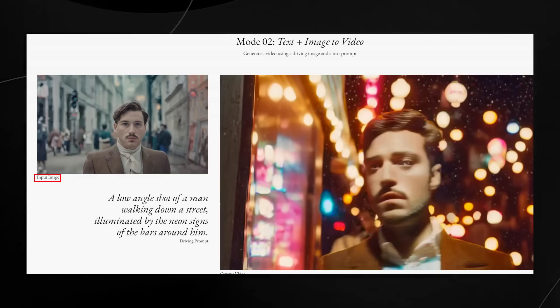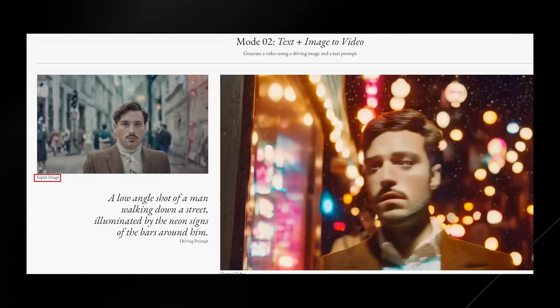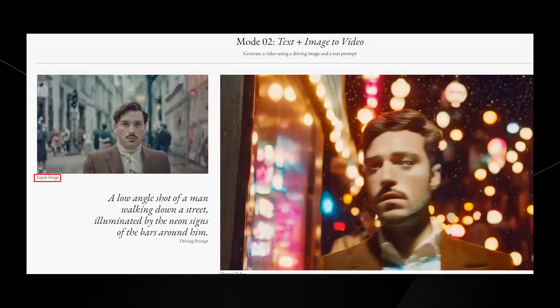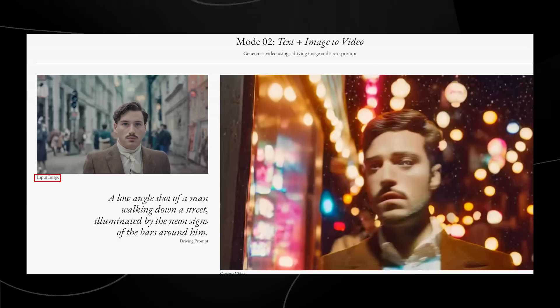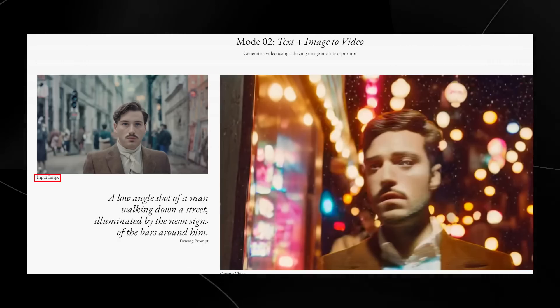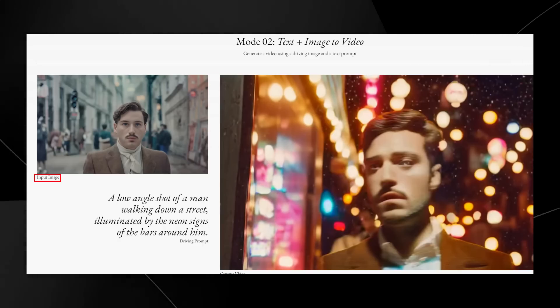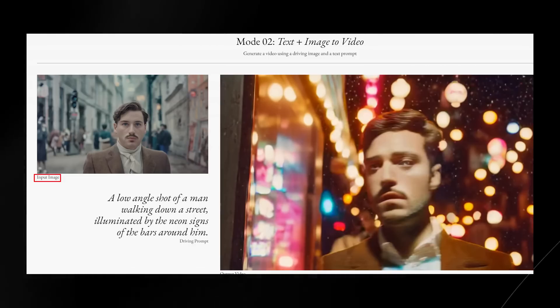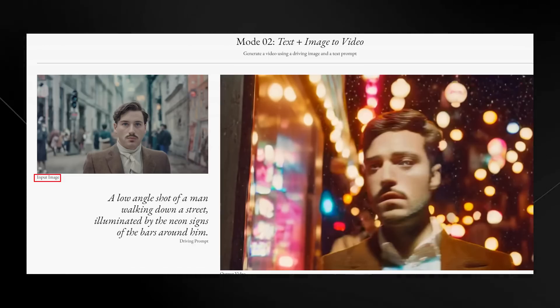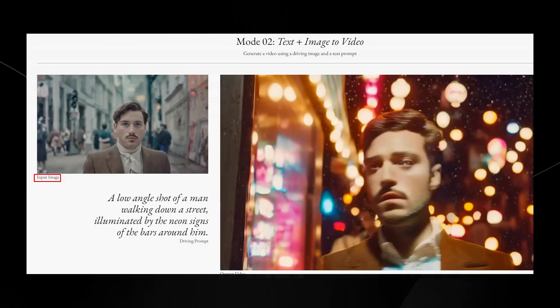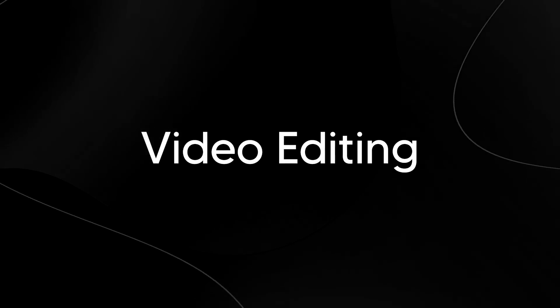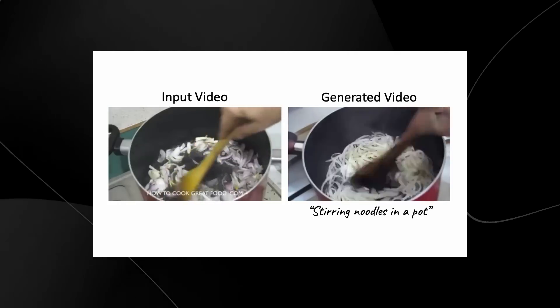And driving images are just essentially images which prompt the scene to have a certain specific style. For example, let's take a look at this. You can see that this is the driving image. And essentially what happens here is that this was given the prompt of a low angle shot of a man walking down a street illuminated by the neon signs of the bars around him. And what's good about this is that if you want to prompt this in a certain way or you want a certain style, you can actually use that image in order to craft that story, which does make this in some aspects much more effective.